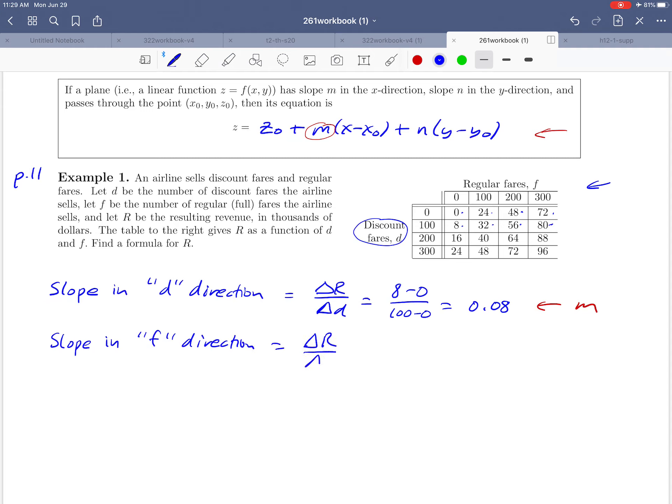That's going to be the change in revenue over the change in F. So to measure that slope, we'll just pick on a couple of points moving horizontally. So our revenue goes from 0 to 24. That's going to be 24 minus 0 over, the change in F is going to be 100 minus 0. 24 over 100 is going to give us 0.24. And that's the number that we're calling N, the slope in the F direction in this case.